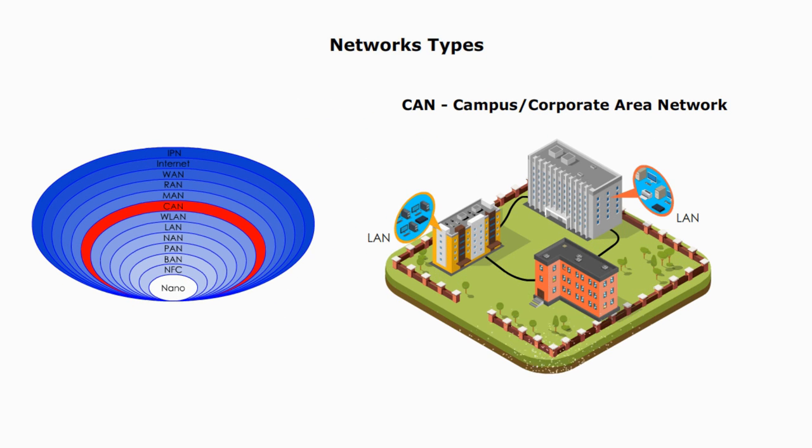CAN, campus area network, or corporate area network, is a computer network made up of an interconnection of local area networks within a limited geographical area.